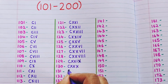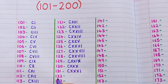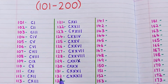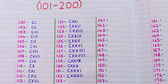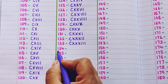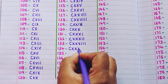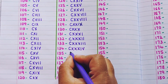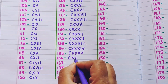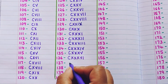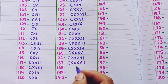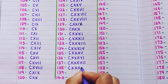131 is CXXXI, 132 is CXXXII, 133 is CXXXIII, 134 is CXXXIV, 135 is CXXXV, 136 is CXXXVI, 137 is CXXXVII, 138 is CXXXVIII.